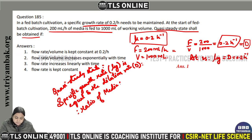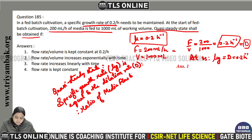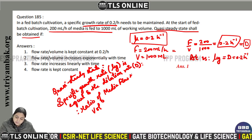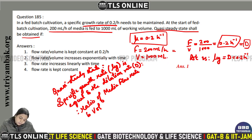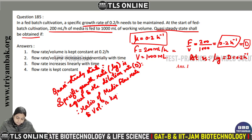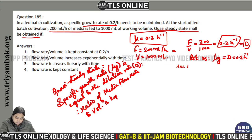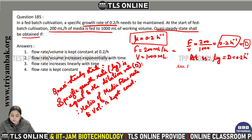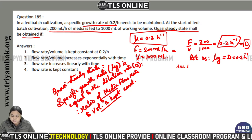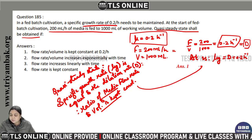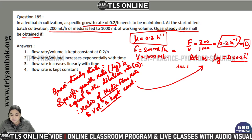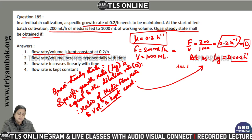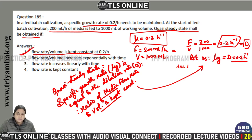The ratio of media flow rate to volume is kept constant at 0.2 per hour. So the most suitable answer is that flow rate per unit volume is kept constant at 0.2 per hour, making option one the correct answer.